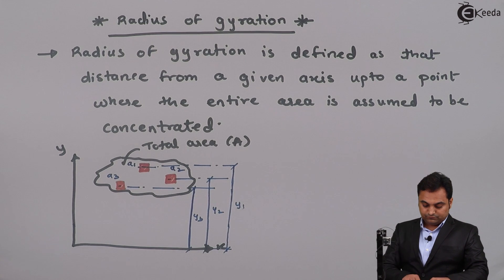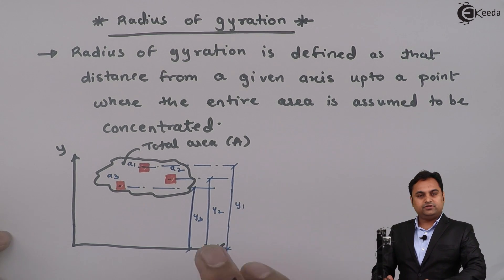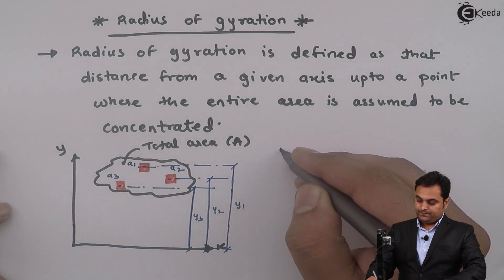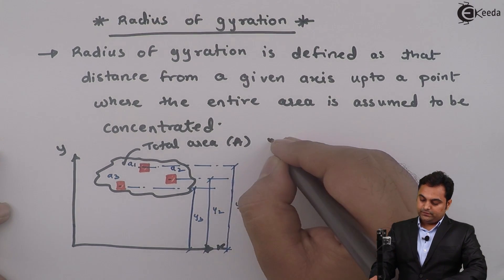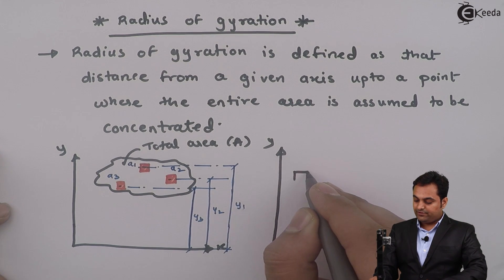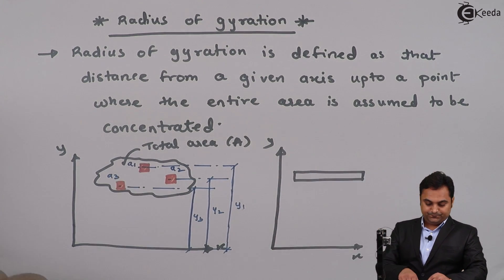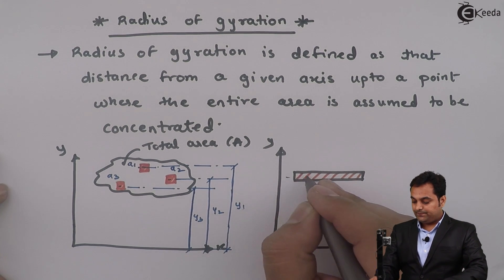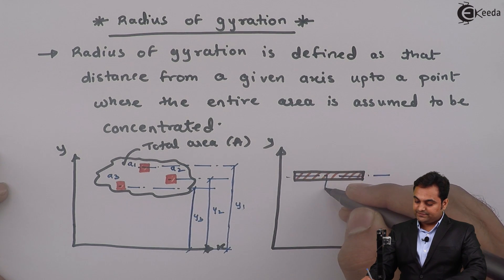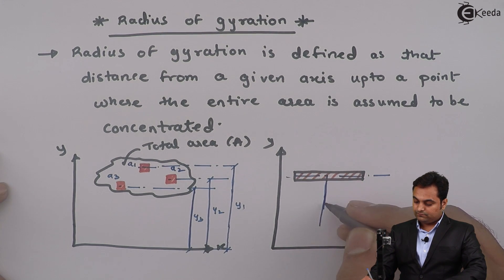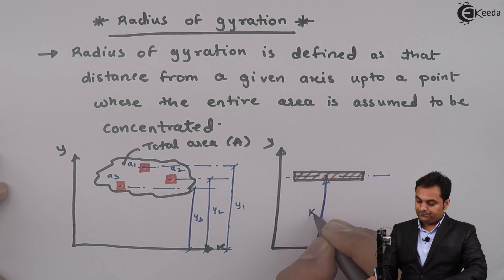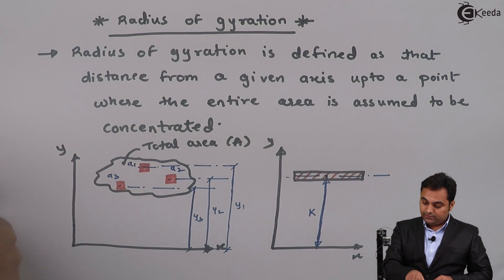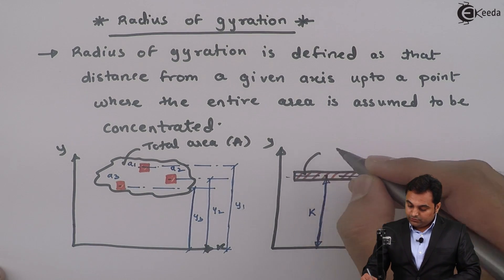So a1 is at distance y1, a2 is at y2, and a3 is at y3. Now for this example I am considering that the entire area is in the form of a strip, and the distance of that strip with respect to the x-axis is k.